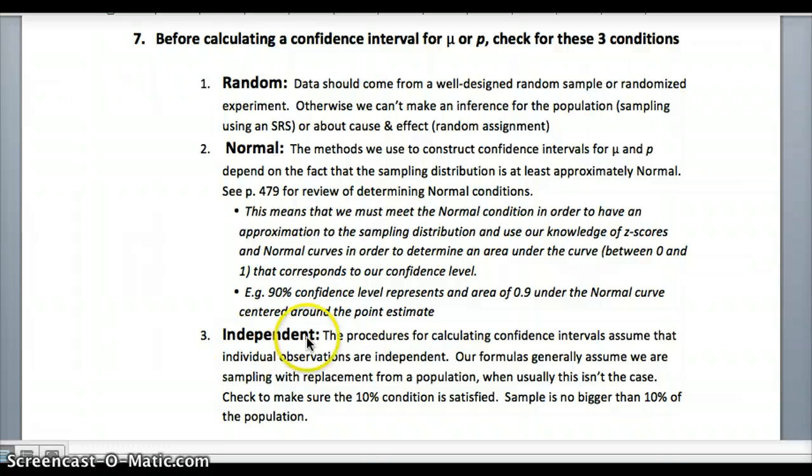Independent. So calculating confidence intervals, we need to know that individual observations are independent. This all has to do with the 10% condition. Remember, we can't sample bigger than 10% of the population, otherwise we lose independence. So the 10% conditions in there, remember other things we talked about, independence, one outcome not affecting another outcome. So those things are all required, random, normal, and independent, and should be checked for before pursuing any more calculations.